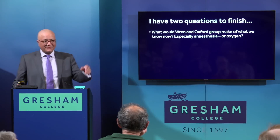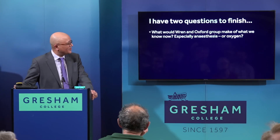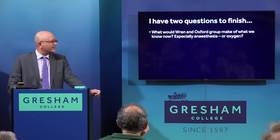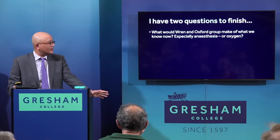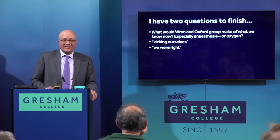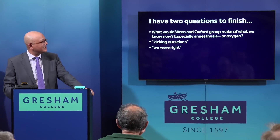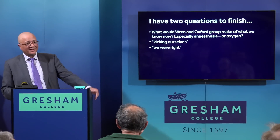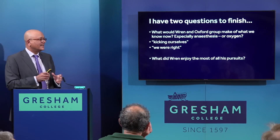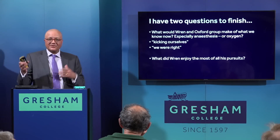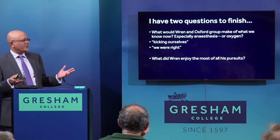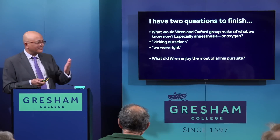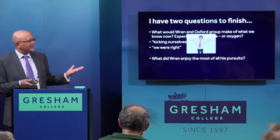I've finished, but I have two burning questions. One is: what would Wren and the Oxford group make of what we know now, especially in relation to anaesthesia — my subject — or oxygen, which is what I research? I think their response would be rather mixed. I think they'd be kicking themselves, because they were there — they got both of it right. But then they would concede that yeah, they knew it was going to happen. The second question is: of all these things Wren was doing — from architecture to astronomy to medical science — which did he enjoy the most? What gave him the most satisfaction — everything from splenectomy to designing St. Paul's? I'm afraid I don't know. Thank you very much for listening.